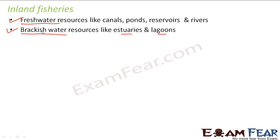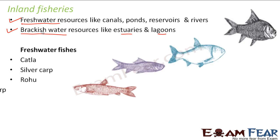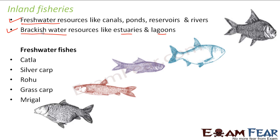Some popular freshwater fishes are katla, silver carp, rohu, grass carp, and mrigal. These are some of the inland fishes. Generally in India, freshwater fishes are comparatively cheaper when compared to marine fishes, as marine fishes are pretty expensive.